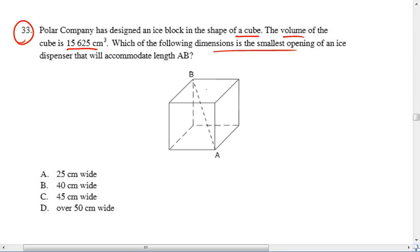So in order to solve this, we're going to need to find the length of AB and then find which of these dimensions, A, B, C, or D, is just larger than that length. All we know for right now is the volume of the cube, and that is 15,625 centimeters cubed. That's our volume.